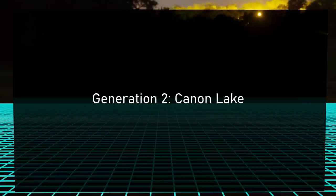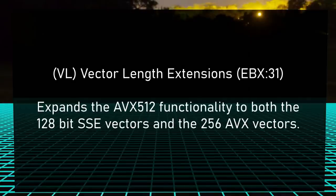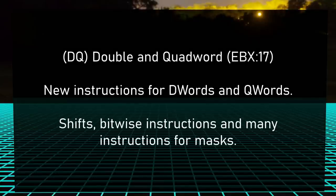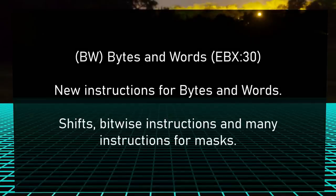Generation 2, Cannon Lake. Starting with VL, the Vector Length Extensions — this adds AVX512 functionality to the AVX and SSE registers, CPU ID flag EBX bit 31. Then DQ, Double and Quad Word: this adds new instructions for D words and quad words, CPU ID flag EBX bit 17. Then BW, operations for bytes and words, CPU ID flag EBX bit 30.